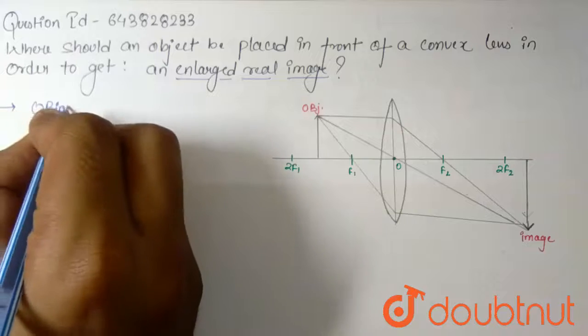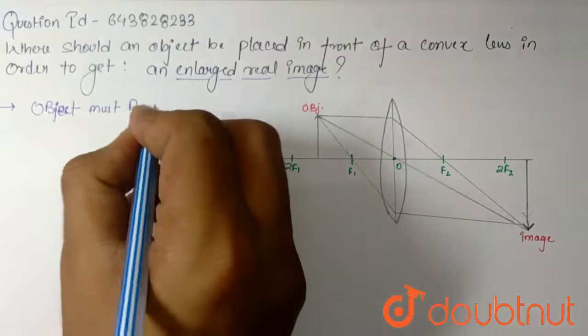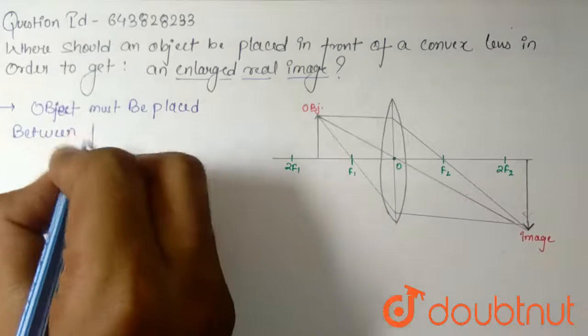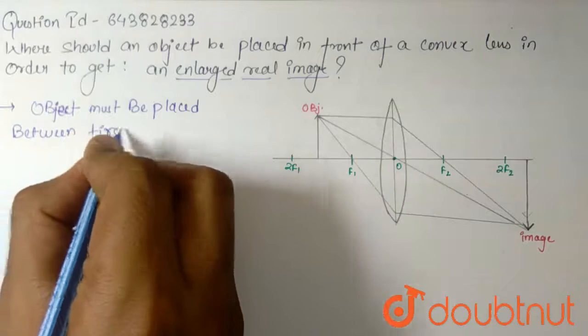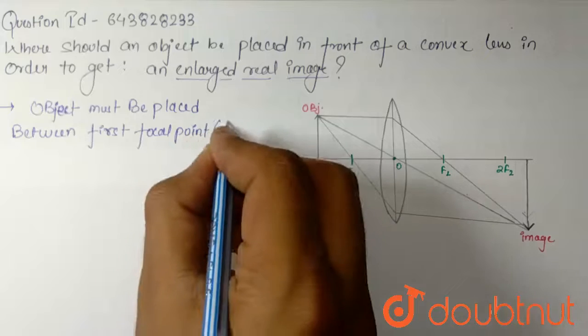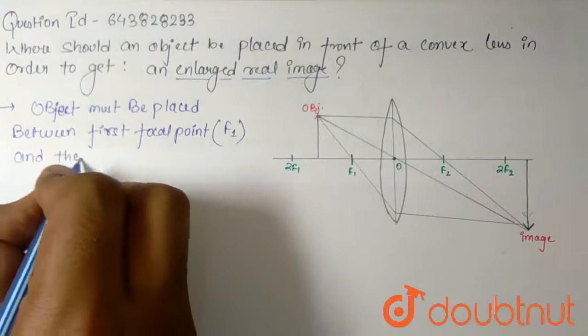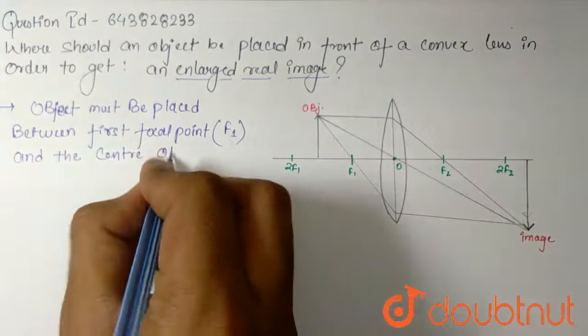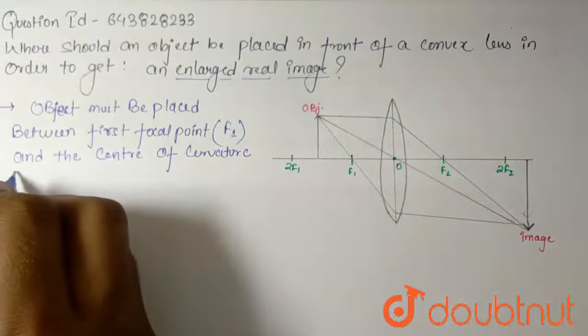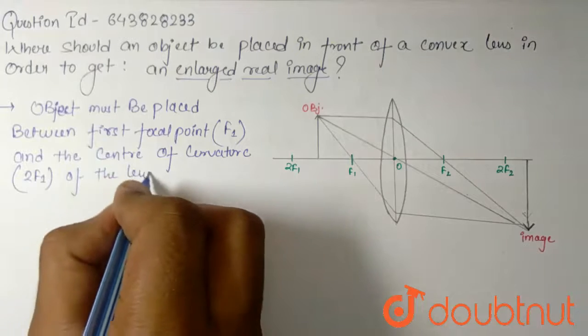The object must be placed between the first focal point, that is f1, and the center of curvature, that is 2f1, of the lens.